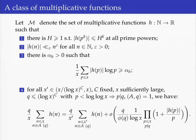The third condition says that if you consider the sequence of values these functions take at primes, then this sequence should have some density. And finally, there is a more complicated condition that says that the functions in our class should have stable mean values in arithmetic progressions. Let's look at this a little bit more carefully.